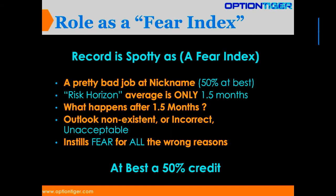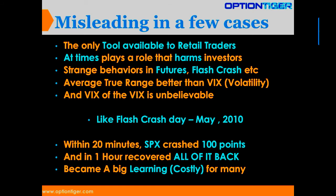As a fear index, the VIX does a pretty bad job — I'd say 50% at best. That's largely because of the short risk horizon of only about 1.5 months; we don't know what happens after that. It instills fear for all the wrong reasons, though it does capture some short-term fear, so I give it 50% credit. It's also pretty much the only indicator available to retail investors and traders using options, which makes its flaws more consequential.